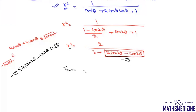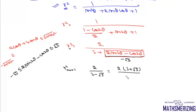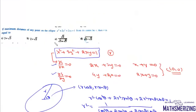So r²_max = 2 / (3 - √5). Rationalizing: 2(3 + √5) / ((3 - √5)(3 + √5)) = 2(3 + √5) / (9 - 5) = 2(3 + √5) / 4 = (3 + √5) / 2. Therefore r_max = √((3 + √5) / 2). The answer is option C.